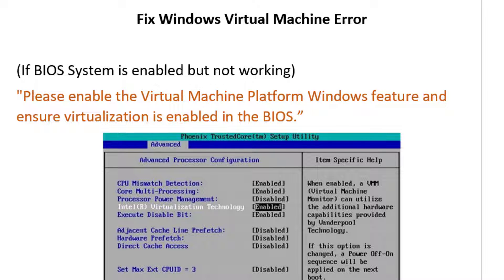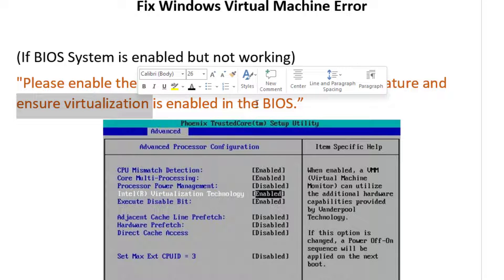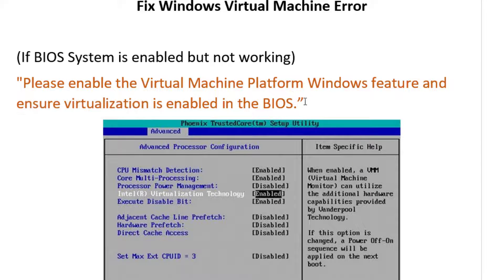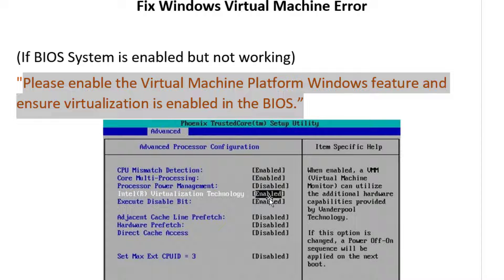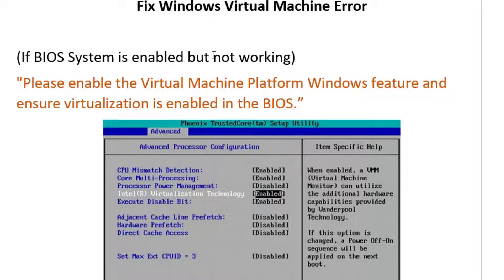Hi guys, there's a new error you may face when working with your system. If you open your Linux or Ubuntu system on your computer and it is telling you to enable the Virtual Machine Platform Windows feature — you should ensure virtualization is enabled in your BIOS — and you know you've done it before and it was working, but all of a sudden it is showing you this error, don't worry, it's not a problem.